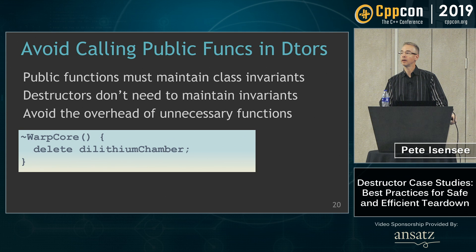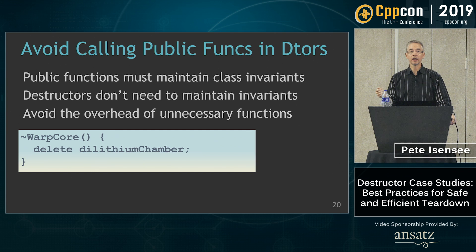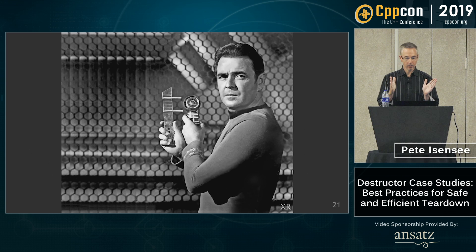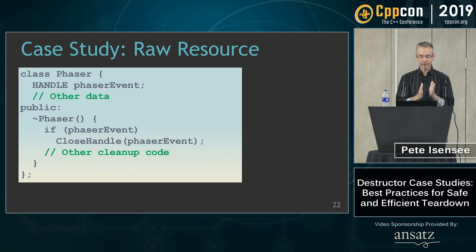Question: are we talking about public member functions, or also private member functions? A private member function doesn't necessarily have to maintain a class invariant, so that might be okay — still could be a yellow flag. A public function does have to maintain those invariants, so that's more of a red flag.